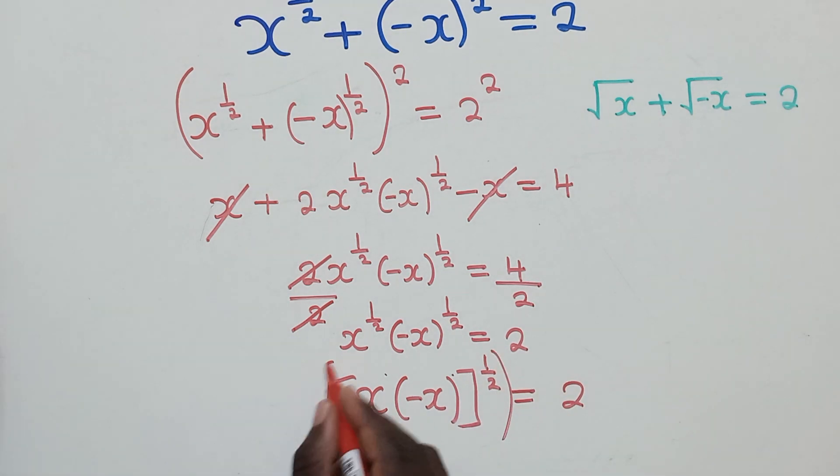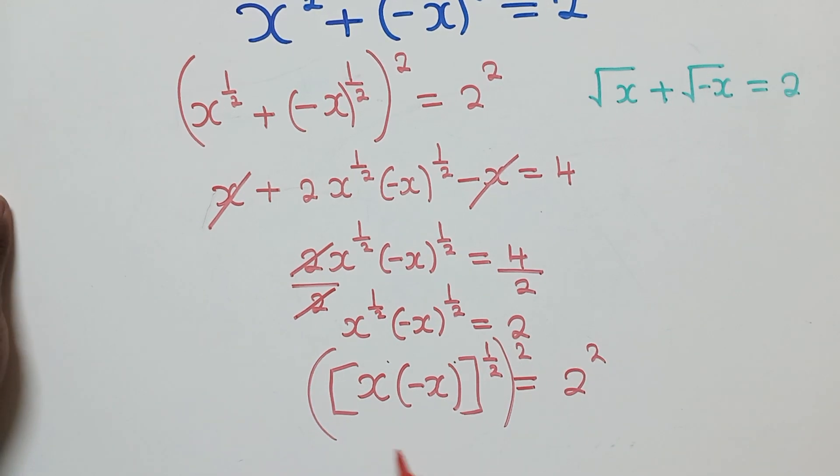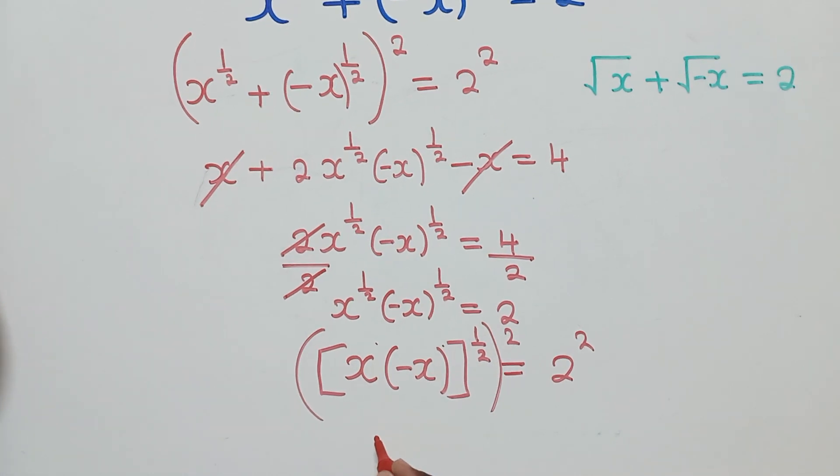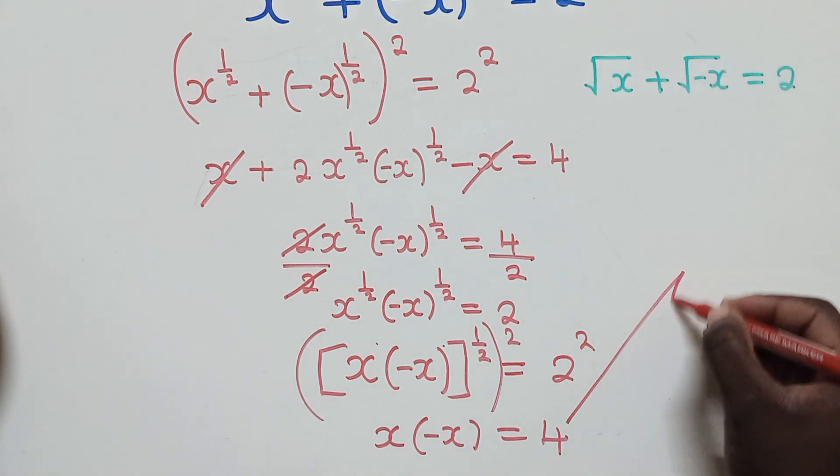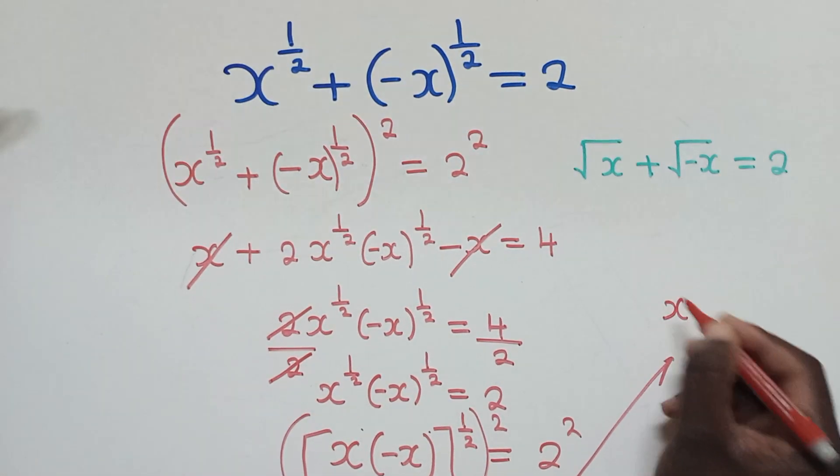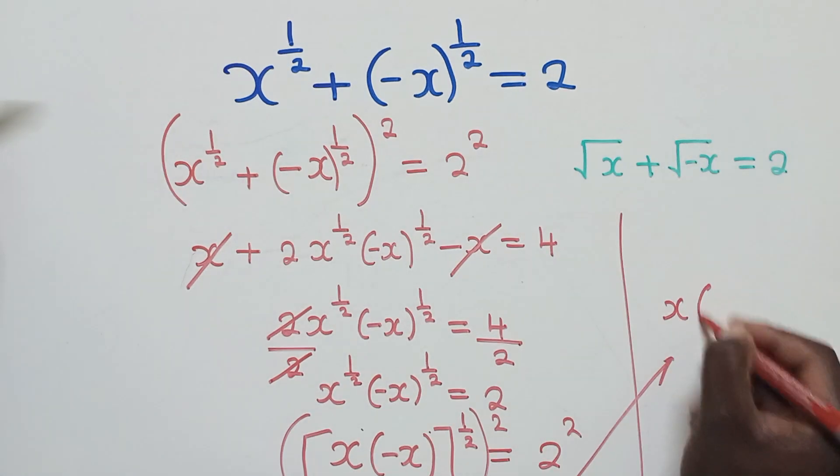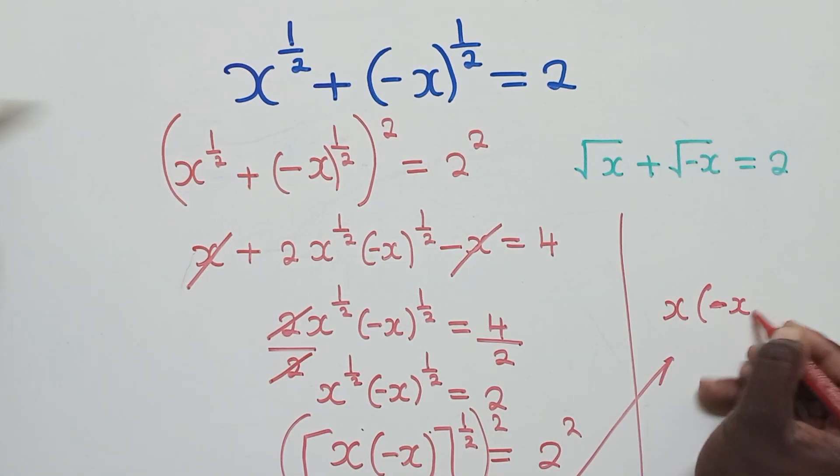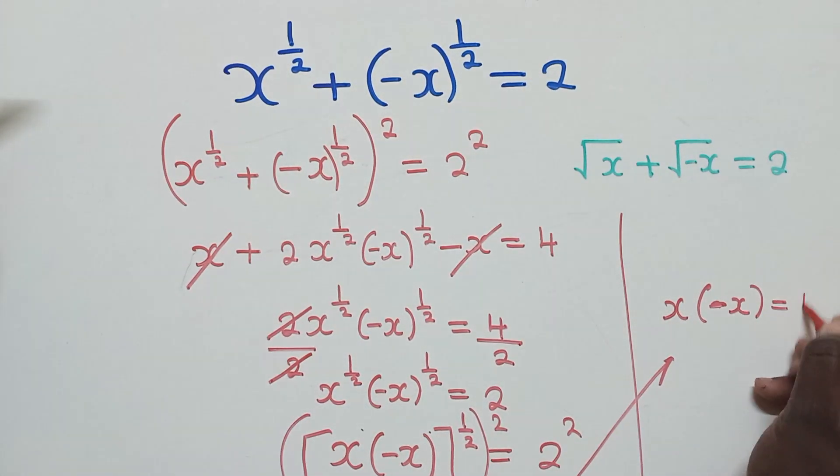So again, we apply the brackets and the power 2 because we want to now cancel this 1 over 2. Also this side by power 2. So we shall have x multiplied by negative x is equal to 4. So now from this point, where we have x, negative x there is equal to 4.